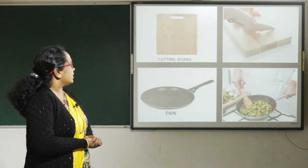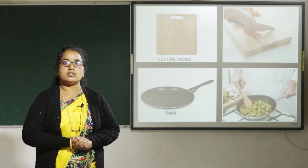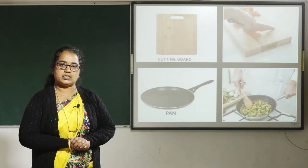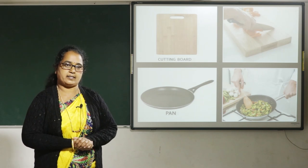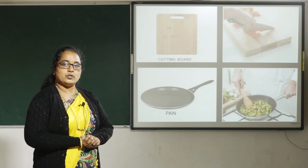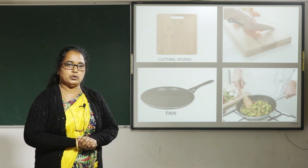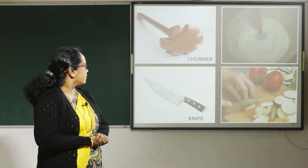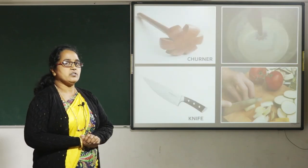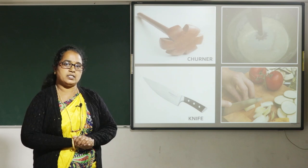Cutting board. A cutting board is used as a protective surface on which to cut or slice things. Pan. A pan is used for frying food. Churner. A churner is used to separate butter from the curd.